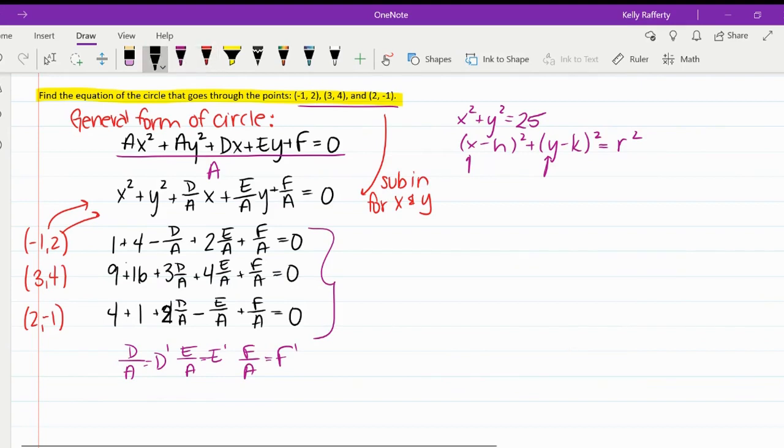So I'm going to just rewrite this. I'm going to take the coefficients first. So that negative D over a, I'm going to write. Now remember, I'm just going to write D prime instead of D over a every time. Plus 2E over a plus F over a equals, I'm going to move these constants, 4 plus 1, over to the other side. So that's negative 5.